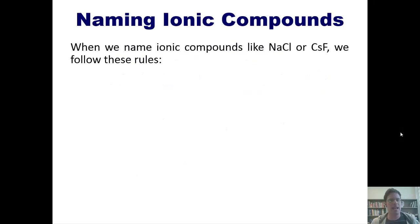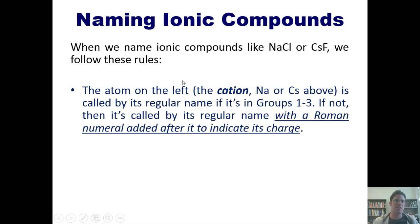When we name ionic compounds such as NaCl or CsF, we follow these rules. First, the atom on the left, the cation, in this case sodium or cesium, is called by its regular name if it's in groups 1 through 3 of the periodic table. If not, especially if you're talking about an element that's in the D or F blocks of the periodic table, then it's called by its regular name with a Roman numeral added after it to indicate its charge.